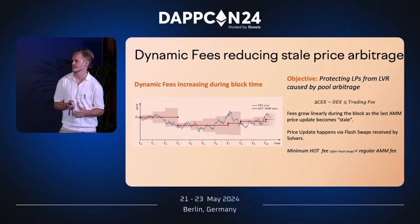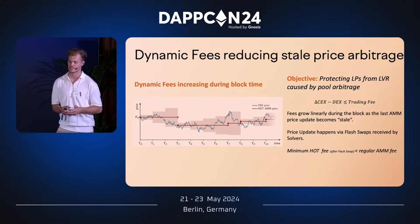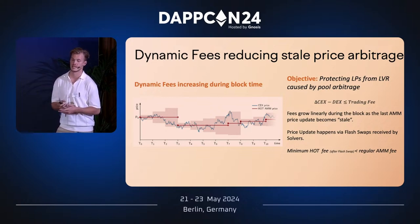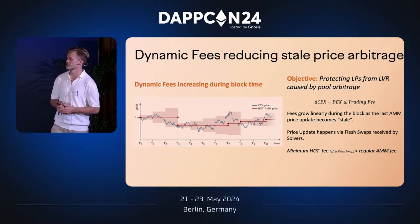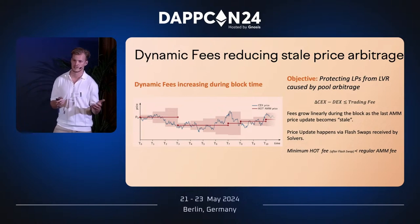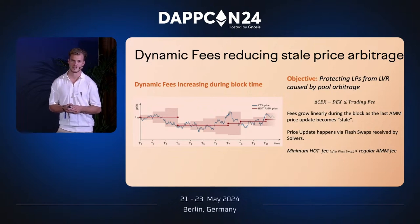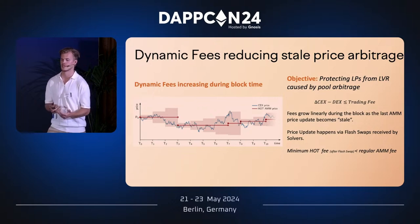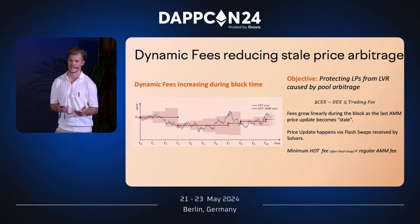Looking at the equation on the right, we aim to protect LPs by ensuring — in as many cases as possible — that the trading fee is larger than the price difference between a centralized and a decentralized exchange. Because of this feature, the minimum HOT trading fee on average is likely to be lower than a regular AMM fee. A traditional AMM charges a standard fee for all retail flow, whereas HOT uses dynamic fees and only charges higher fees when necessary to protect against arbitrage.